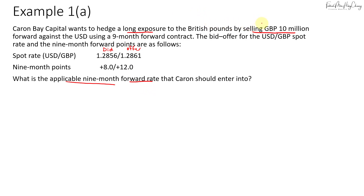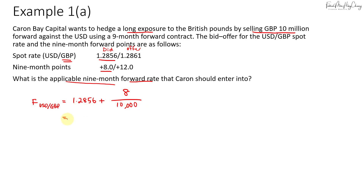In this case, I want to sell pounds and pounds is my base currency. When we are selling pounds, we have to remember we are the end-user, so we always sell at the lower rate. When we buy, we buy at the higher rate. So if I'm selling pounds I will sell at the lower rate, using the nine-month points on the bid side. The applicable forward rate for dollar-to-pound will be 1.2856 plus 8 over 10,000 — remember to convert to decimal by dividing by 10,000 — giving us 1.2864.